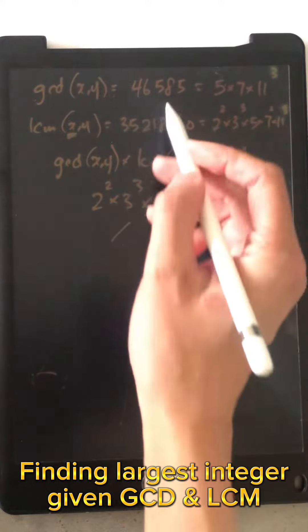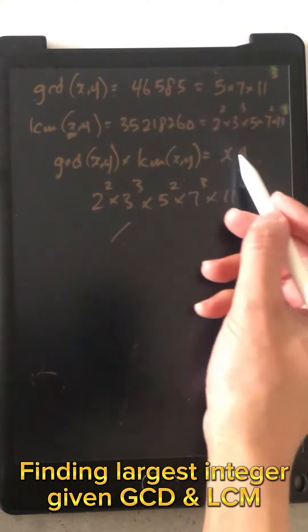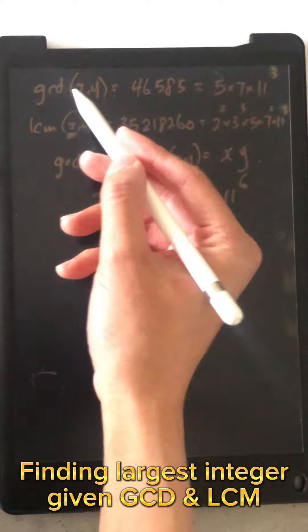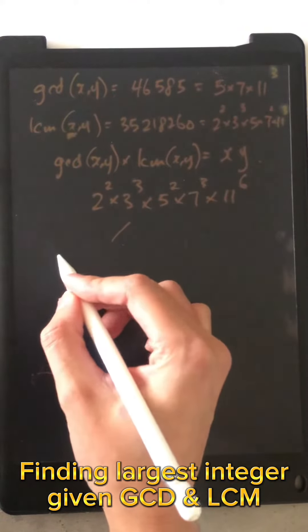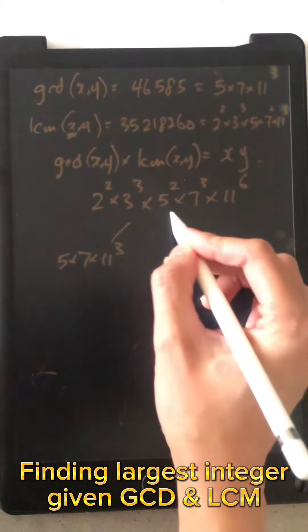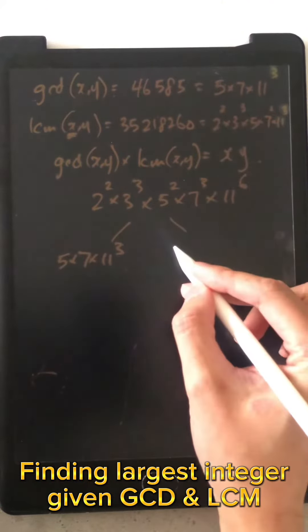And you know that one of the factors has to be the GCD because we want the minimum of x and y to be greater or equal to this number. So that will be 5 times 7 times 11 cubed, and the other will be the LCM here.